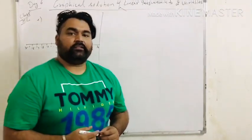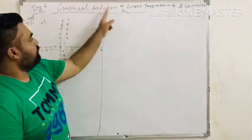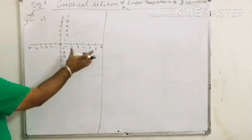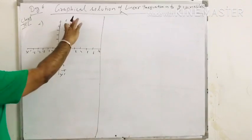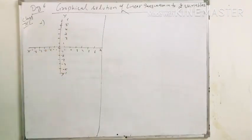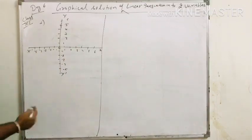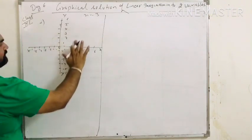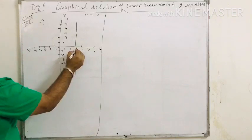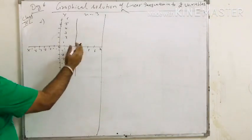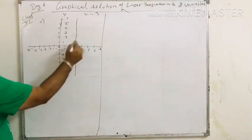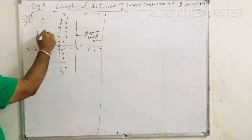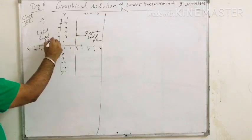Good morning students. Today is day six and the concept is graphical solution of linear equations in two variables. This is the coordinate plane — positive value of x, negative value of x, positive value of y, and negative value of y. This is the origin, zero zero. For example, if x equals to 3, we plot x equals to 3. Any line divides the xy plane into two parts: the right half plane and the left half plane.